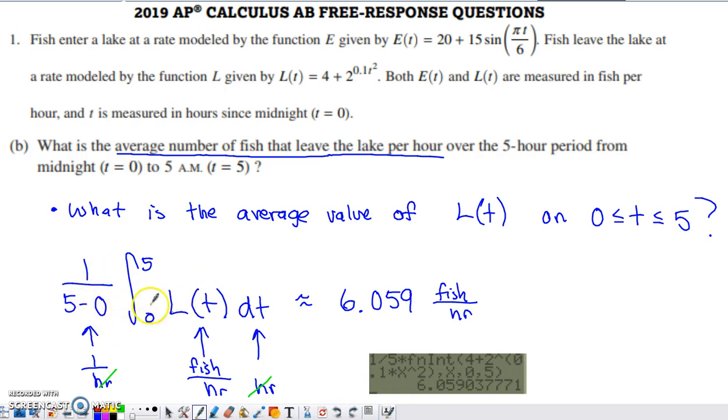If you think about the units of this average value of a function calculation, which is what you see I've written out right here, I've got one over five minus zero. Now, five and zero are time. So this is going to have units of one over time, one over hours. L(t) has units of fish per hour. And then just like we talked about in part A, dt has units of hours.